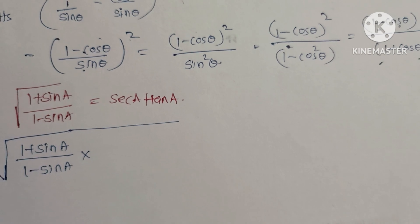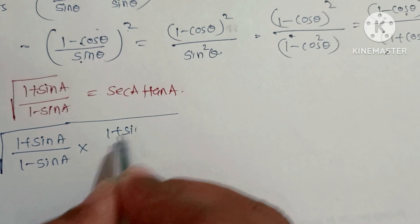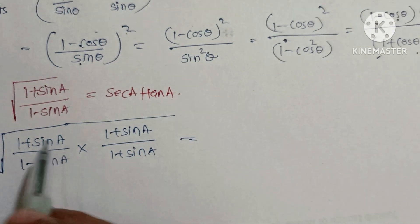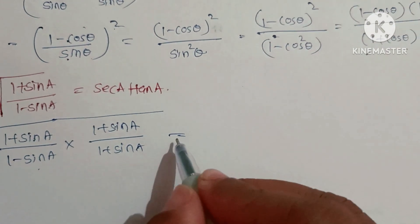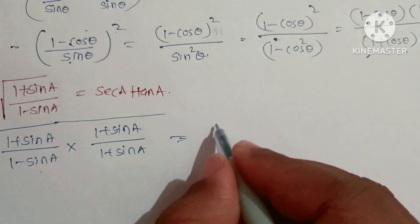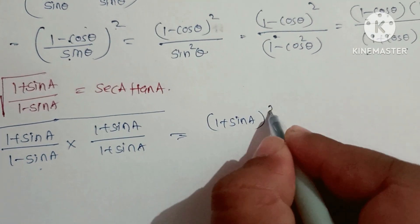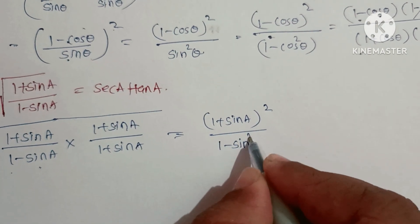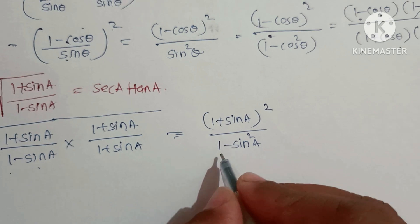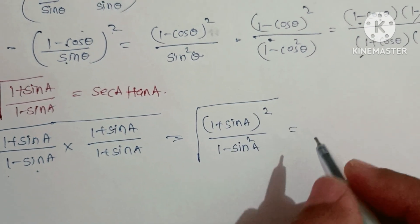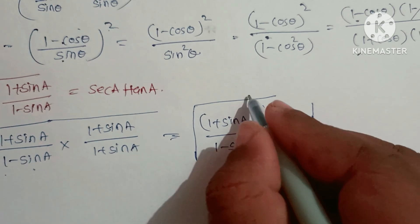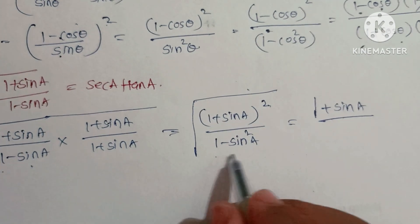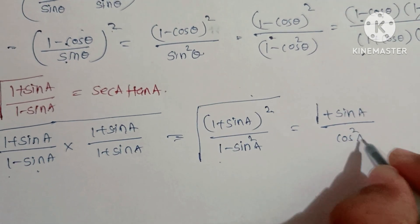Numerator becomes (1 + sinA)² and denominator becomes (1 - sinA)(1 + sinA) = 1² - sin²A = 1 - sin²A = cos²A. So we have √[(1 + sinA)² / cos²A]. The square root cancels, giving (1 + sinA)/cosA.